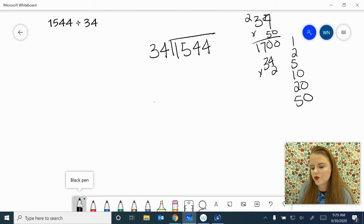34 times 20. 2 times 4 is 8. 2 times 3 is 6. 680. I guess that's going to have to work. I could have tried 40 or 30. That's kind of up to you and what you're comfortable multiplying by.